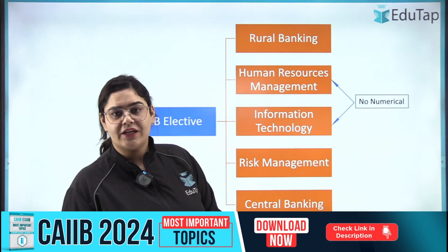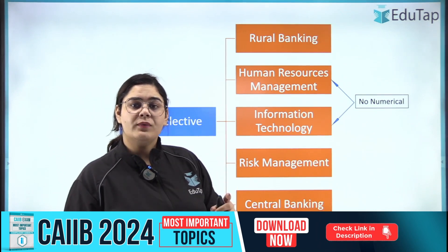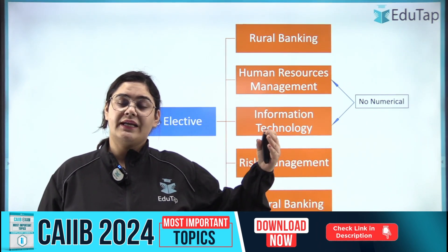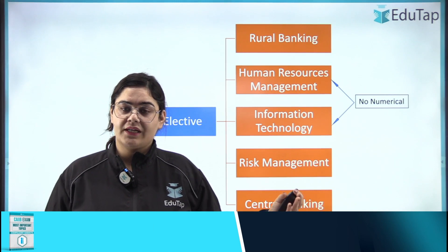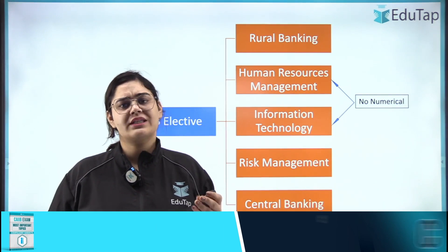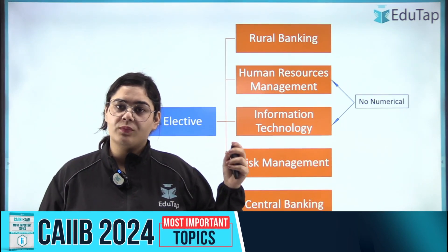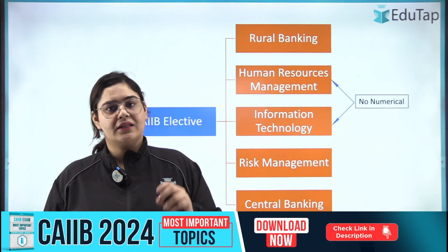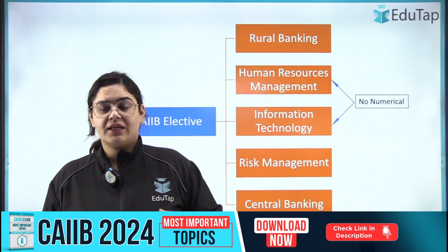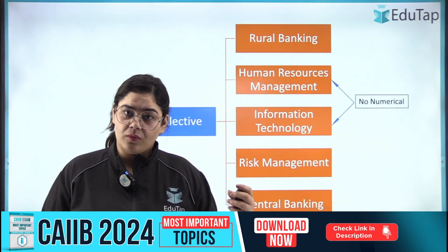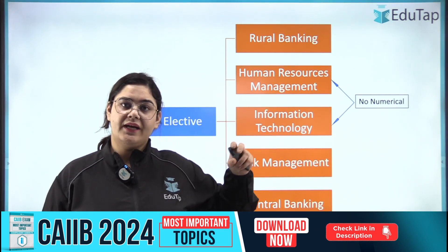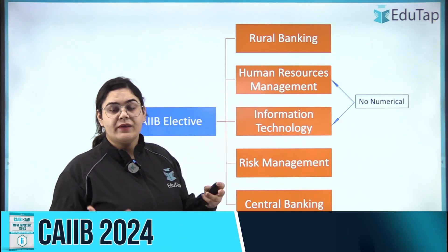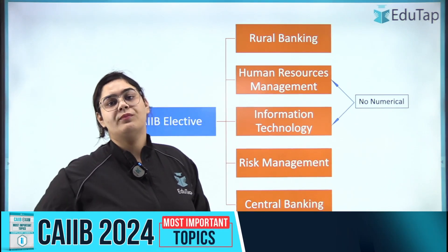Then there is Human Resource Management. HRM is already a component of the compulsory subject ABM, so you get a lot of overlap from it. If you find ABM easy and its HR component easy, then you can take this subject. Plus, there is another benefit — there are no numericals in it.